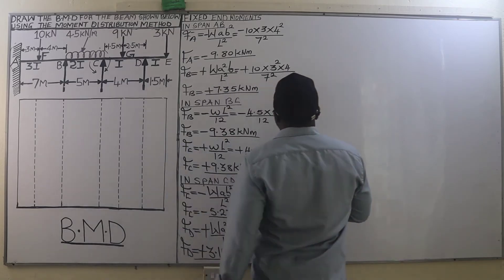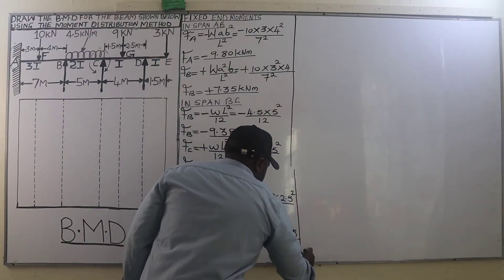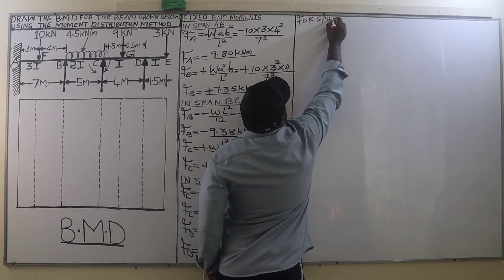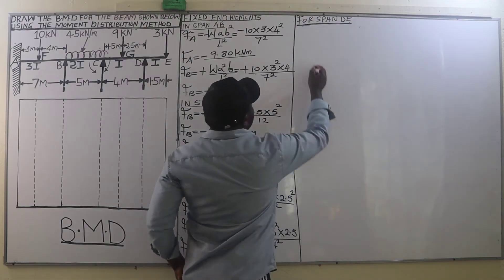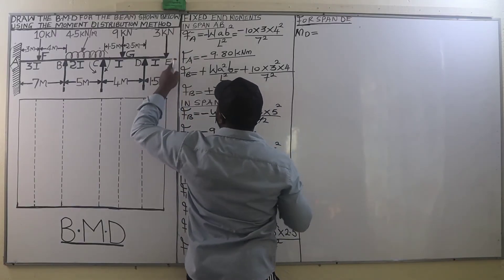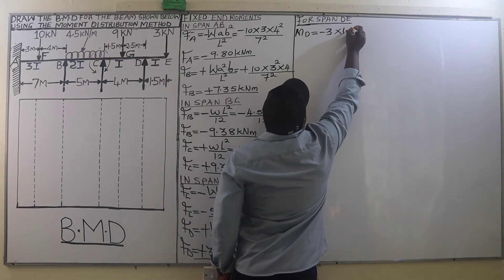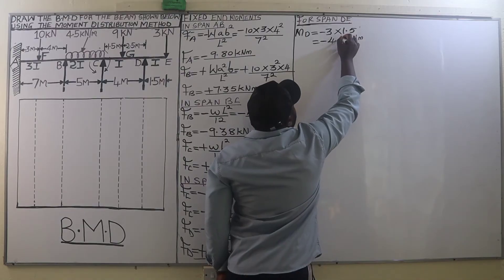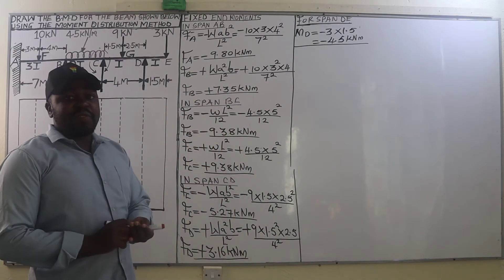Those are the fixed end moments in span CD. Next we go to span DE. Since this is an overhanging end, the bending moment at D is determined by taking moments about D: negative 3 kN multiplied by span DE of 1.5 m, giving negative 4.5 kN·m. We are now done with the calculation of fixed end moments in all spans.